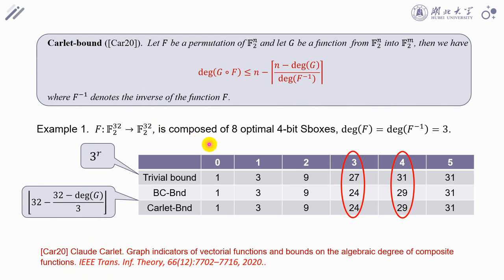This example shows the effectiveness of the two bounds. The triple bound, which is the maximum degree at round 4. However, the two bounds give the degree of 29 at round 4, which is more accurate than the triple bound.